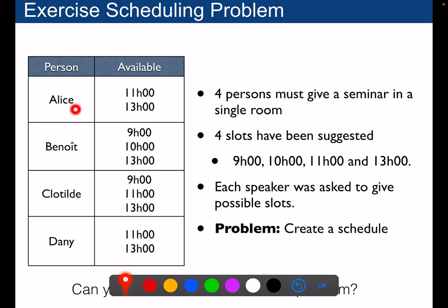So we need to create a schedule. We have the persons here and we have all the availabilities of this person. So Alice is available at 11 and she's also available at 13.